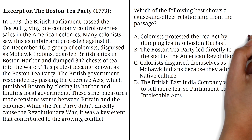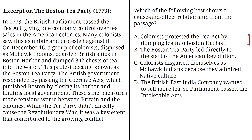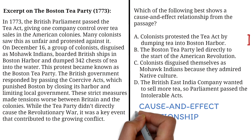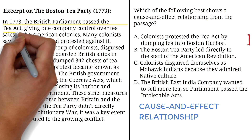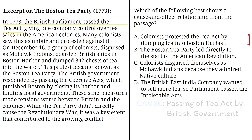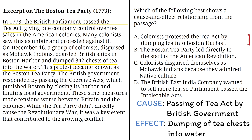Now let's go through the answer choices. Option A says: Colonists protested the Tea Act by dumping tea into Boston Harbor. That's correct. This is a clear cause-and-effect relationship. In the excerpt, the cause is when the Tea Act was passed by the British government in 1773, and the effect was when the colonists responded by dumping 342 chests of tea into the water. The passage directly explains the colonists' action as a result of the Tea Act that was passed.